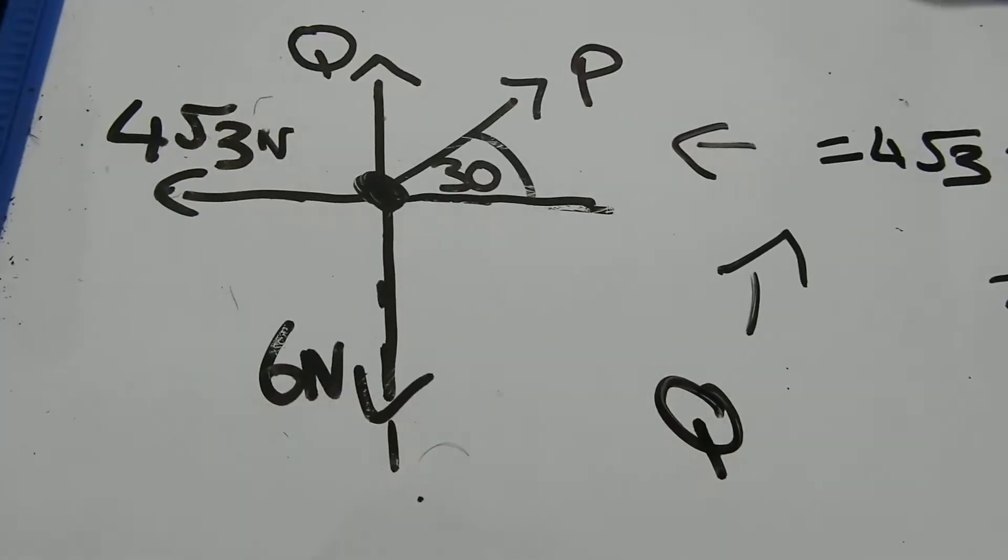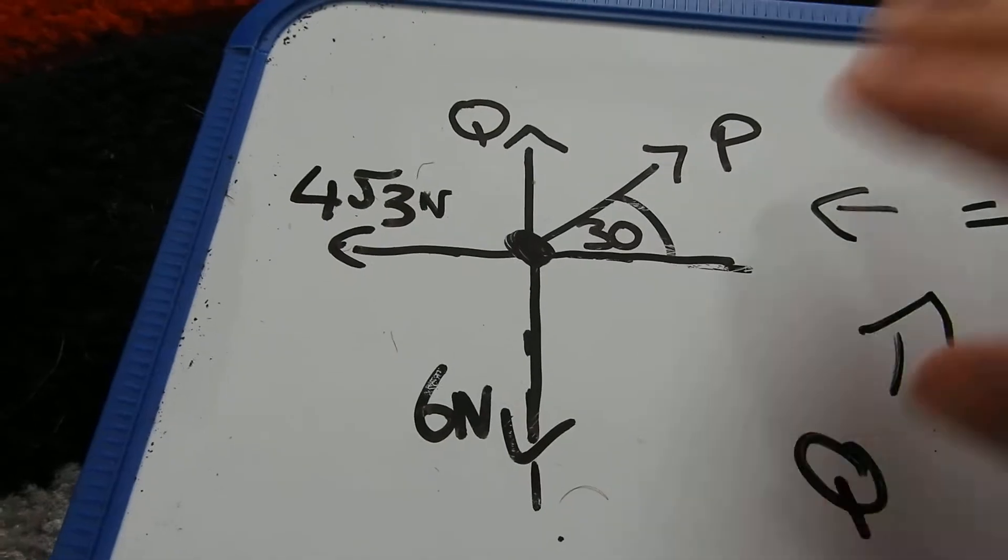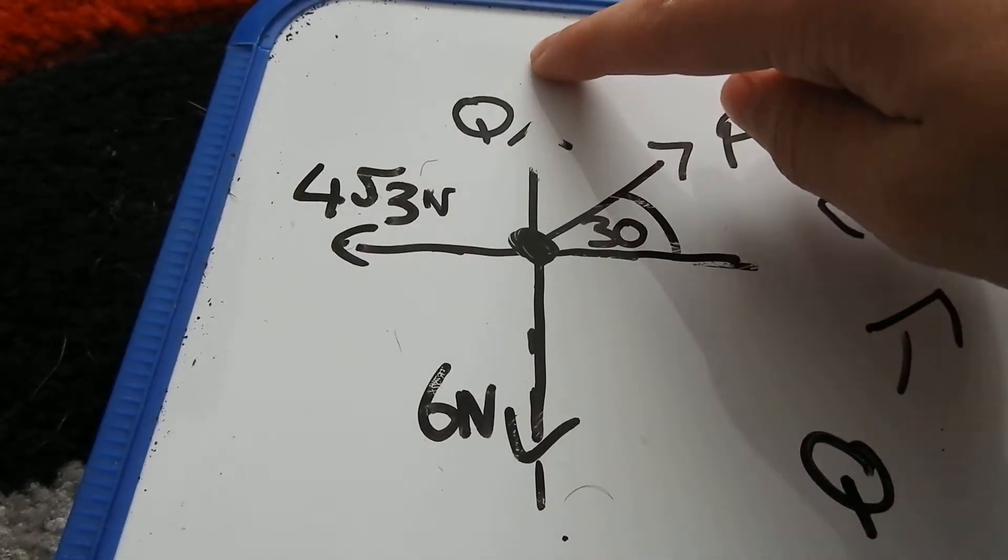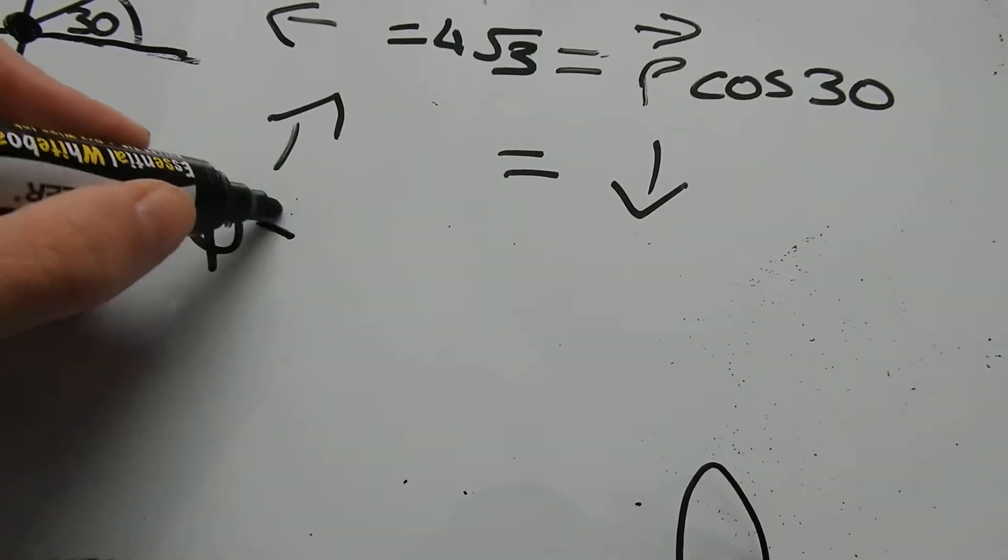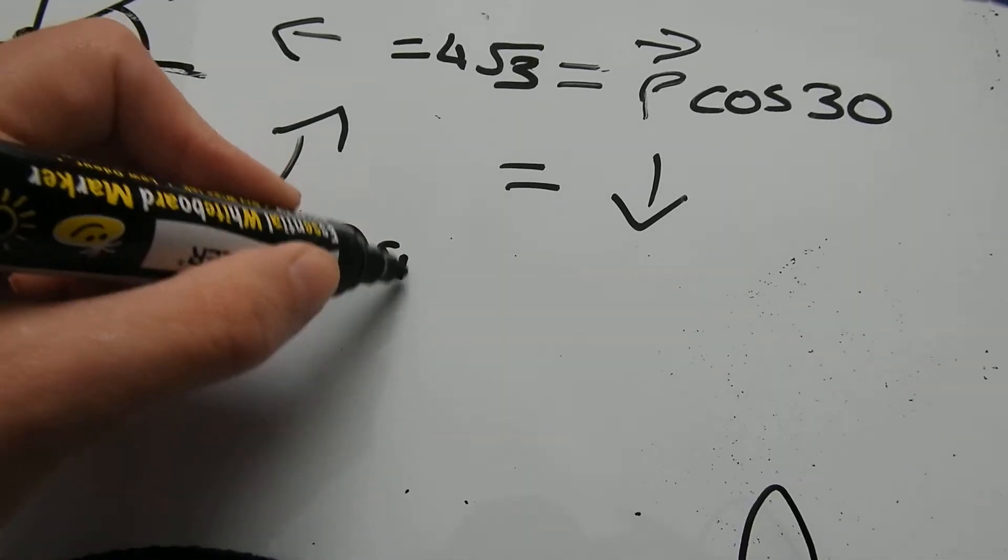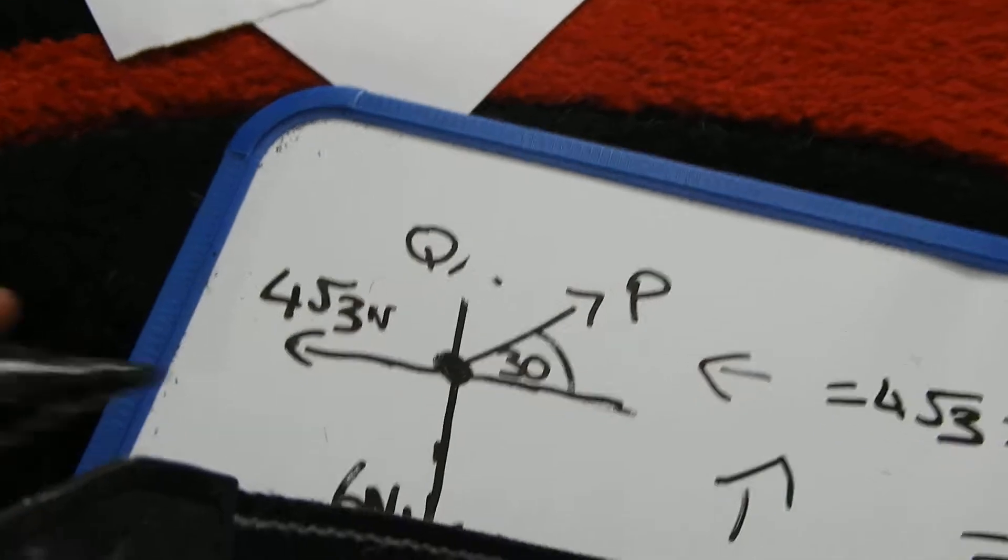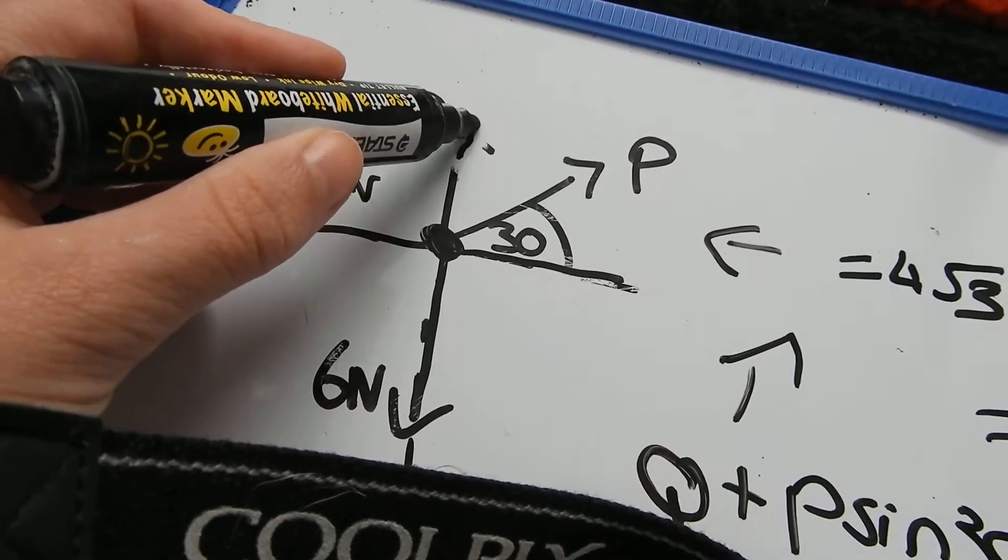In the second one here, we're going to resolve P for its vertical. So it's going to be P sine our angle, which is 30. We've got nothing else here that's going up.